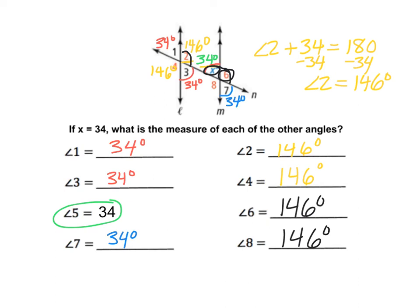Whenever we have a pair of parallel lines being intersected by a transversal, we're going to end up with 8 total angles, and 4 of them are going to measure one number, and 4 of them are going to measure the other number.